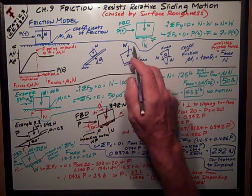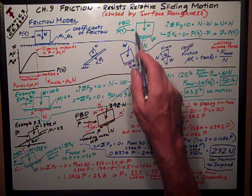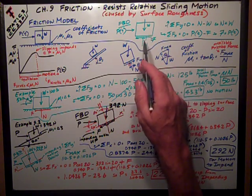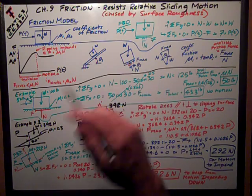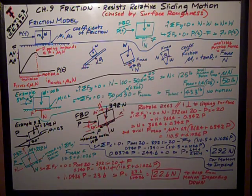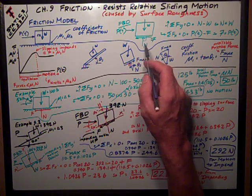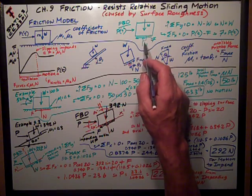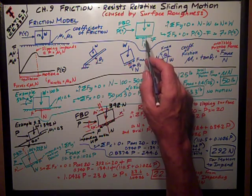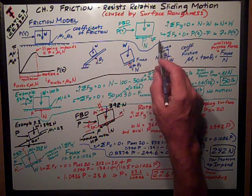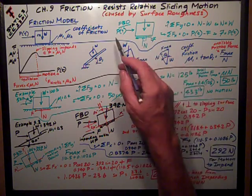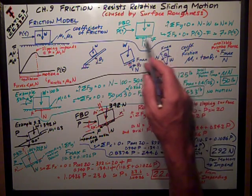We're drawing a free body diagram over here in the green of that block with the force acting on it and the weight. Remember with the free body diagram, we remove the supports and show the reactions. We have a normal force that's perpendicular to the surface it's sliding on — I've drawn that with that little perpendicular sign — and we have the friction force that acts parallel to the surface it's trying to slide on.